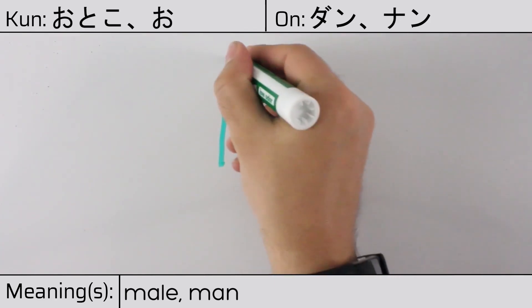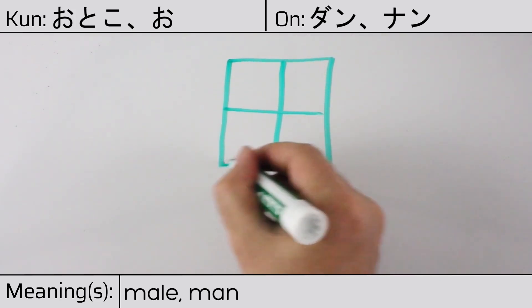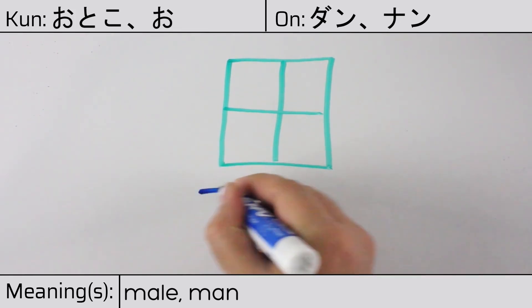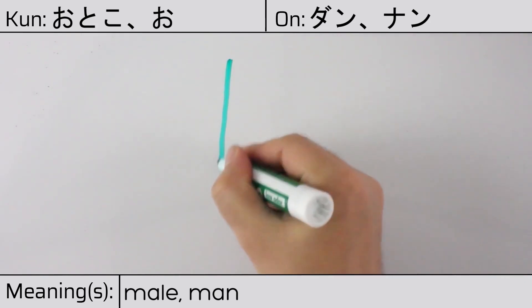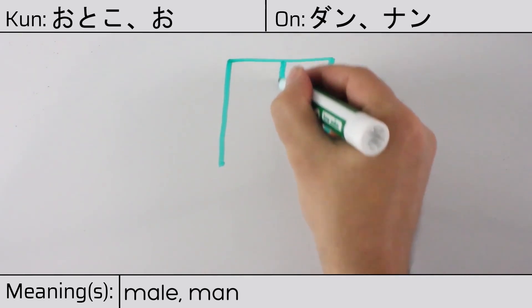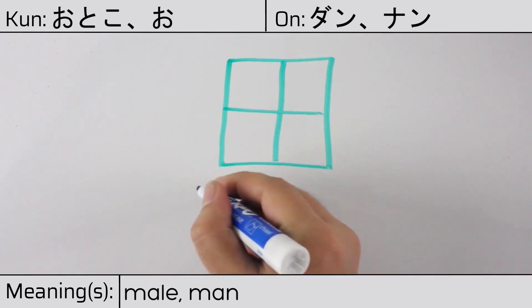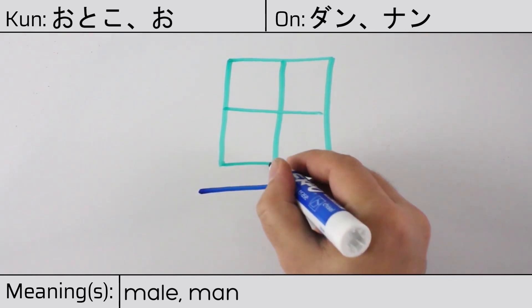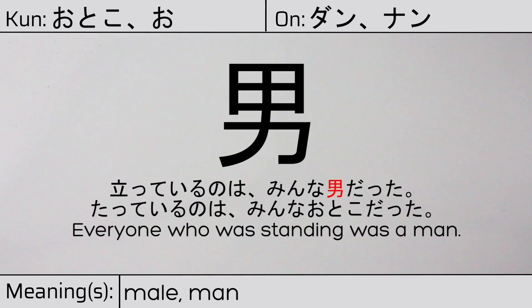This character is made up of the following radicals or parts: field tane or rice patty, followed by katakana ka or the radical meaning strength or power. You can remember this kanji by the following hint: the fields can use a man's strength. Our example sentence is: 立っているのはみんな男だった — Everyone who was standing was a man.